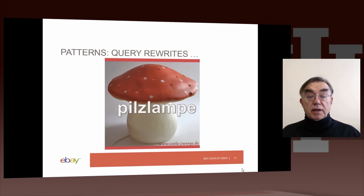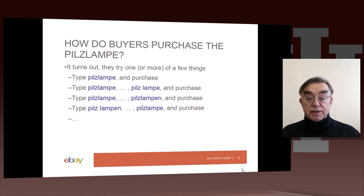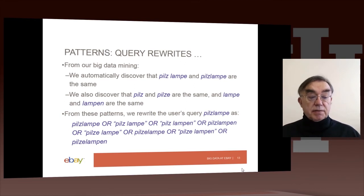If you look at what they learned — they analyzed what people who purchased the Pils lamp actually typed. They typed 'Pils lamp' correctly spelled, or put a space between Pils and lamp, or added an 'e' to lamp, or put gaps between Pils and lamp. All of those queries correspond to people wanting to buy Pils lamps. You can learn that by seeing what people type and what they buy. They effectively determined that various things are really identical: you can have an 'e' on Pils or not, an 'm' on lamp or not, a space between Pils and lamp or not.